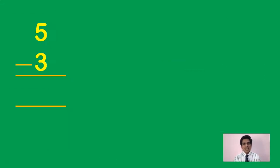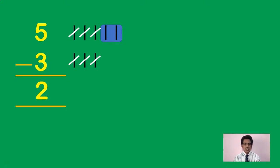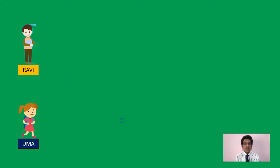Let us take one more example. Let us find 5 minus 3. What is the value of 5 minus 3? It is actually 2. We draw five lines and we draw three lines. The common ones cancel. How many lines are remaining? Two lines. So 5 minus 3 is 2. It's like five pens minus three pens will give you two pens.